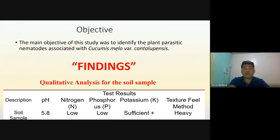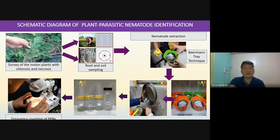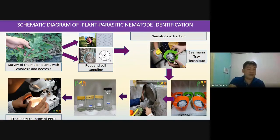For the method on the collecting and processing of nematodes, the first thing that we did was make a survey of the melon plants in Cucurbitaceae, specifically those that possess chlorosis and necrosis, because these have a greater chance of being affected with nematodes. We then collected the root sample and the soil sample using the auger.